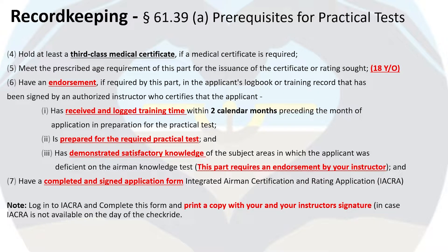You must have completed an application on the Integrated Airmen Certification and Rating Applications website, also known as IACRA. It is recommended that you print a copy of your signed IACRA application and bring it with you to the checkride just in case the IACRA site is not reachable. Without this form — either electronically on the site or printed out — the DPE cannot continue with the checkride. You and your instructor must have signed the IACRA application form.